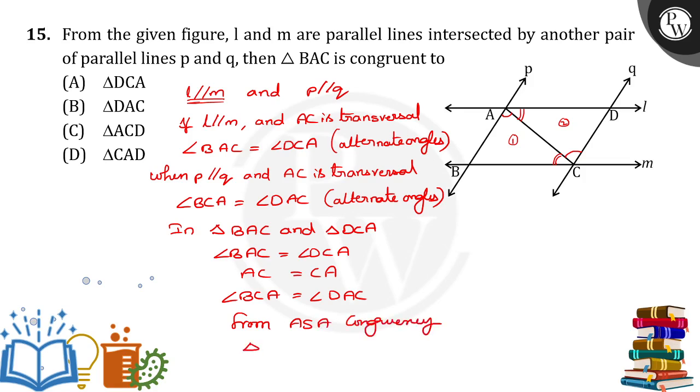From ASA congruency, triangle BAC is congruent to triangle DCA. So option A will be the correct answer. Thank you.